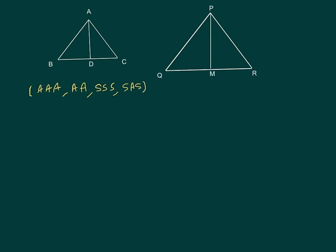So let us first decide which rule we should be using. We already have two sides proportional for these two triangles. If we can prove either the third side proportional we can use SSS, or if we can prove angle A equal to angle P then we can use SAS. So we choose to prove by SAS.